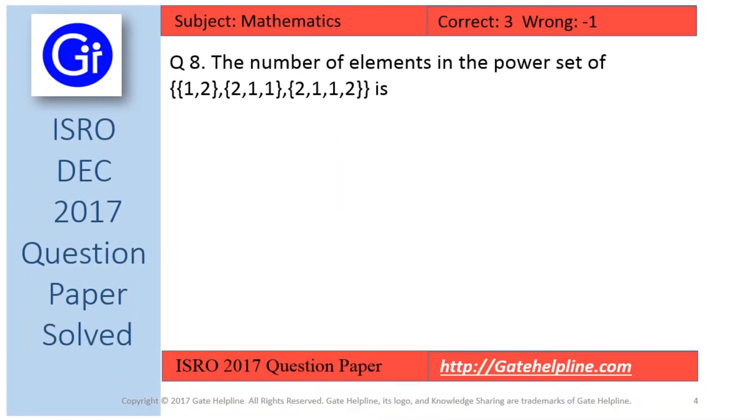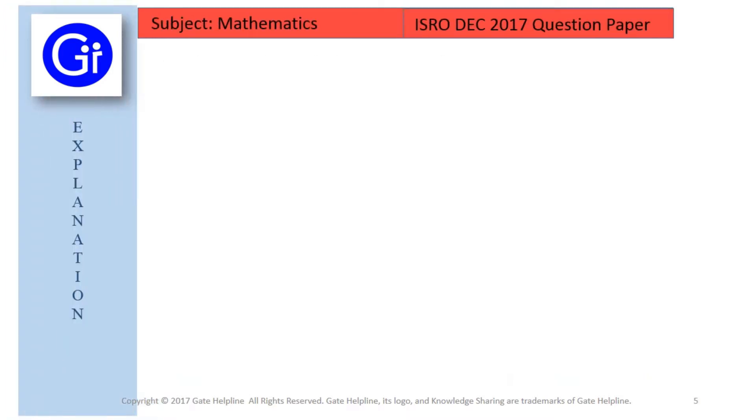So friends question number 8 is the number of elements in the power set of the given set, and the options are A: 3, B: 8, C: 4 and D: 2. So friends now we will see explanation to this question.